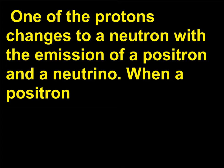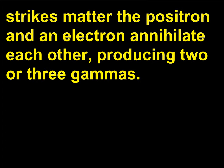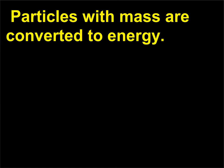When a positron strikes matter, the positron and an electron annihilate each other, producing two or three gammas. Particles with mass are converted to energy.